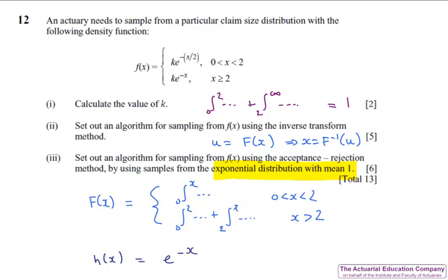We know that the next step is to obtain our value of C, which is the maximum of the function we want, divided by our H of X. But because our PDF is in two parts, we'll need to work out the maximum for each part of the PDF and see which is the biggest, and take that as our value of C.